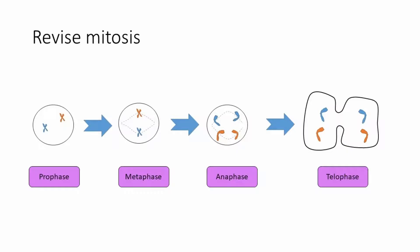For revision, mitosis has four phases: prophase, metaphase, anaphase, and telophase.